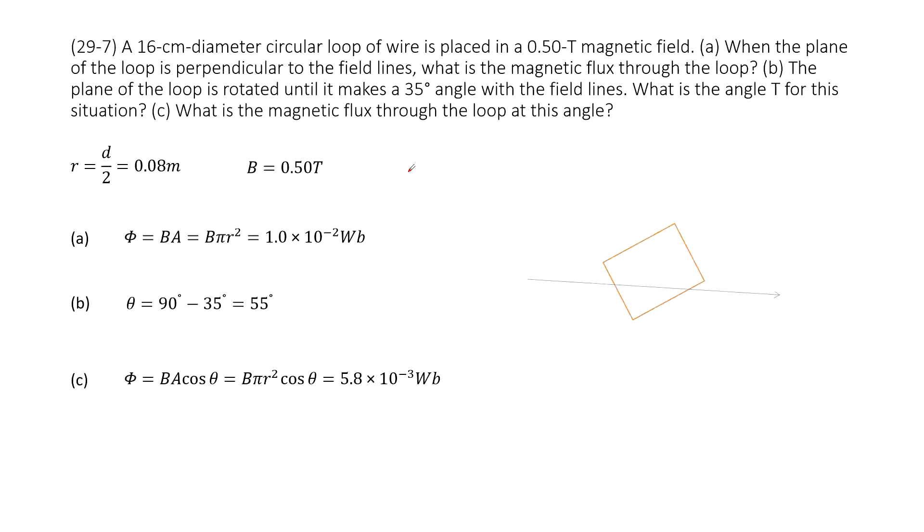So now we have a coil, right? And then n is 1 and the diameter is given. So we can get the radius as diameter over 2 there. And the magnetic field is given 0.5T.